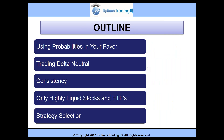So what's the plan for today? We're going to cover some key points. We're going to talk about using probabilities in your favor — a fundamental concept for option traders. We'll delve into that in a lot of detail. We'll talk about trading delta neutral — how to do it, why it's important, and lots of key tips and tricks. We'll talk about consistency — some of the key things you need to have to be successful. And we'll cover how liquidity and commissions can make a big difference, why we'll only trade highly liquid stocks and ETFs, and then finally strategy selection.